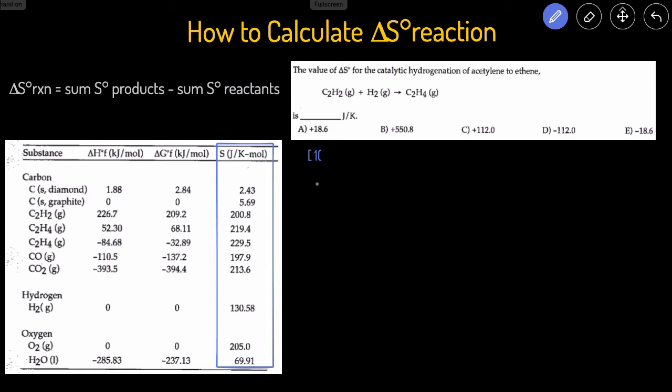We're going to be using just the S, so we'll be paying attention to this column over here. So it'll be one times the C2H4 S value, which you can see is 219.4. And that's it for the sum of the products.